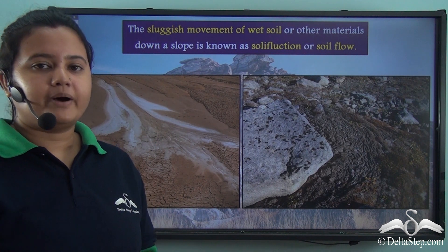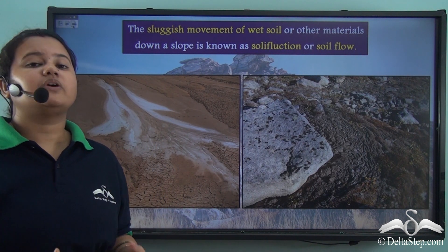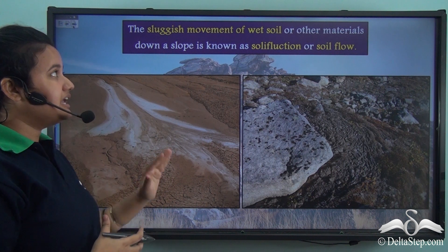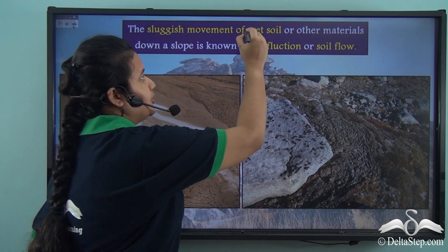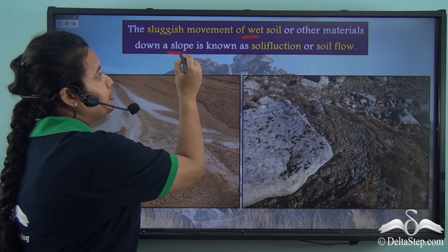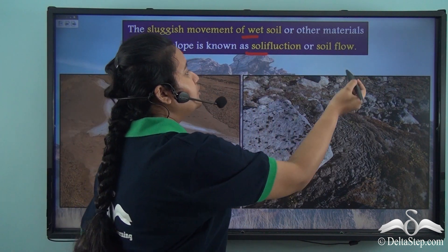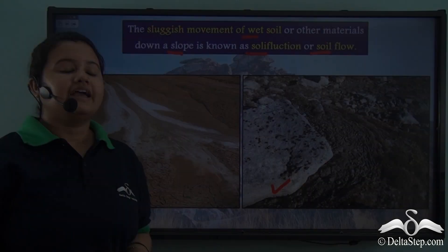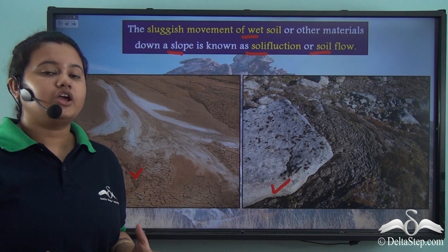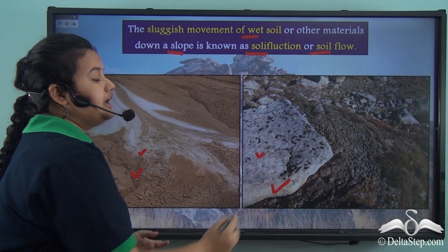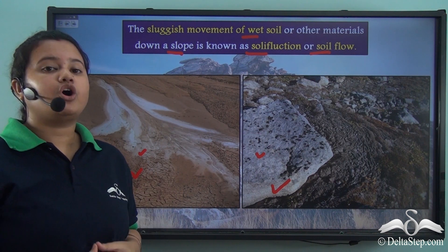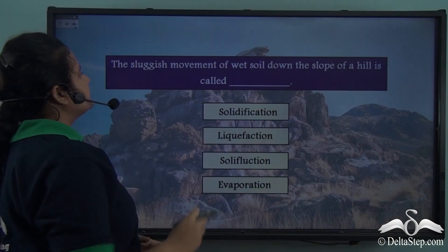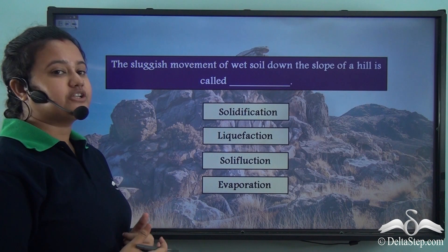Sometimes rock particles and soil get mixed with water and move down the slope of a hill very slowly. This sluggish movement of wet soil and other materials down the slope of a hill is known as soliflexion or soil flow. In these pictures we can see that the soil almost flows like a liquid. Just like soil creep, soil flow or soliflexion is a very slow movement.